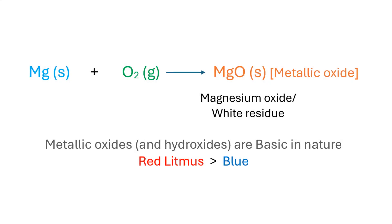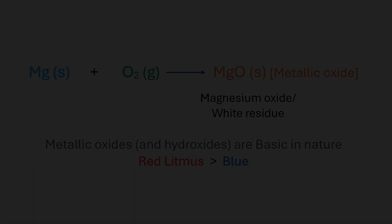The reaction of magnesium with oxygen can be summarized in a simple chemical equation. The white residue formed at the end of the reaction is magnesium oxide. Metallic oxides and metallic hydroxides are generally basic in nature, which is why the red litmus turned blue when in contact with the residue. Had it been acidic, the blue litmus would have turned red, which was not the case. The reaction of magnesium with oxygen is also classified as a combination reaction because a single product is formed by the chemical combination of two reactants.